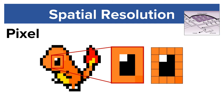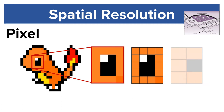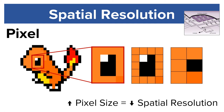If you were to increase the physical size of the pixels, like in the far right image, you would notice that there is a decrease in spatial resolution because the large pixels cannot resolve nearby structures.